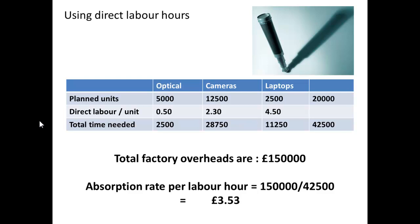If we make sure we know the total time — the total time for direct labour hours — then we can work out an absorption rate per labour hour. For optical instruments, 5,000 units at 0.5 hours per unit would give a total time of 2,500. On the same basis, cameras would give 28,750, laptops 11,250. That gives us a total number of hours of 42,500. If total factory overheads were £150,000, I divide that by 42,500, and I've got an absorption rate of £3.53 per labour hour.